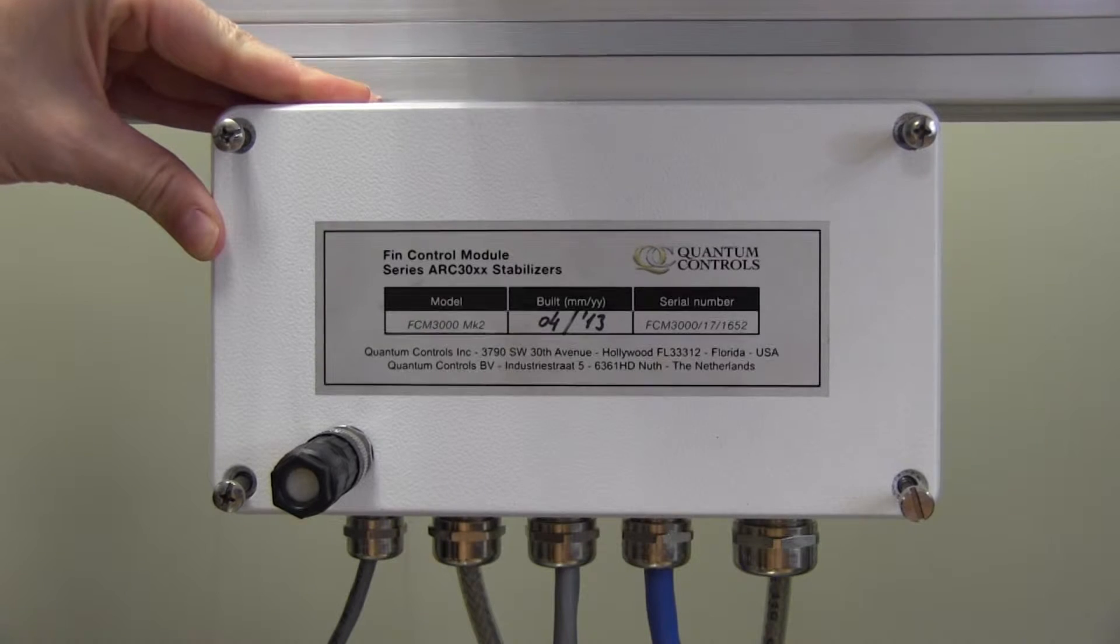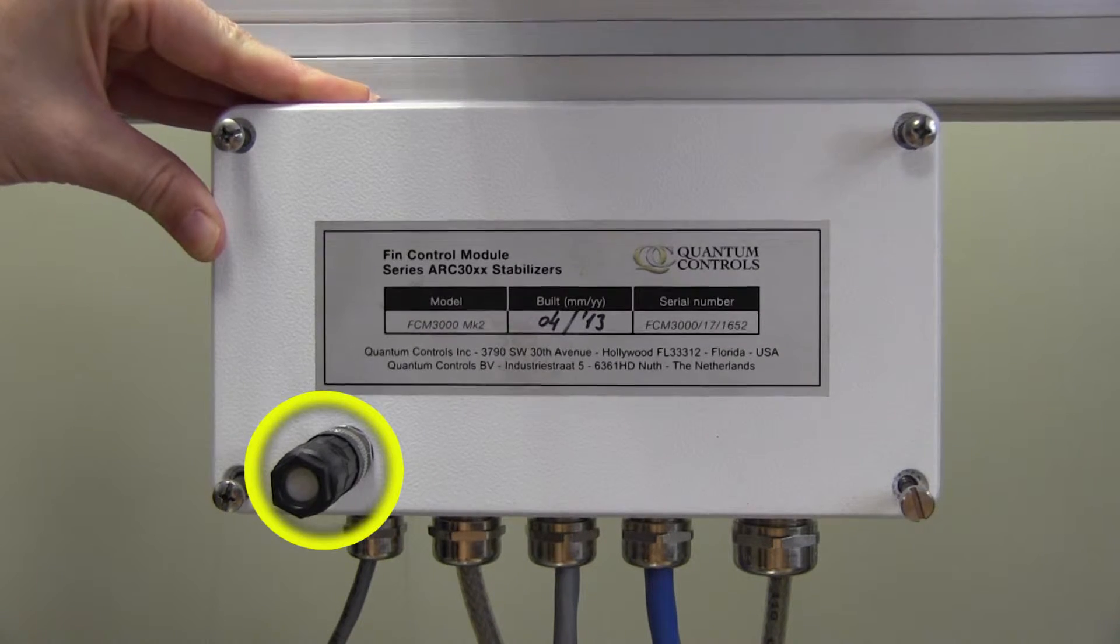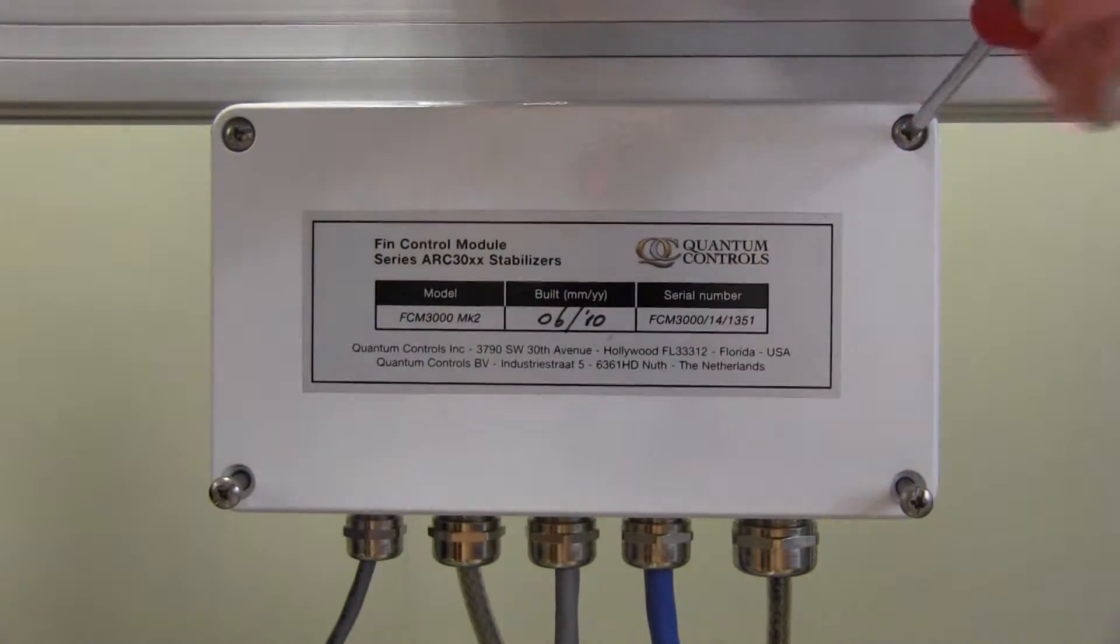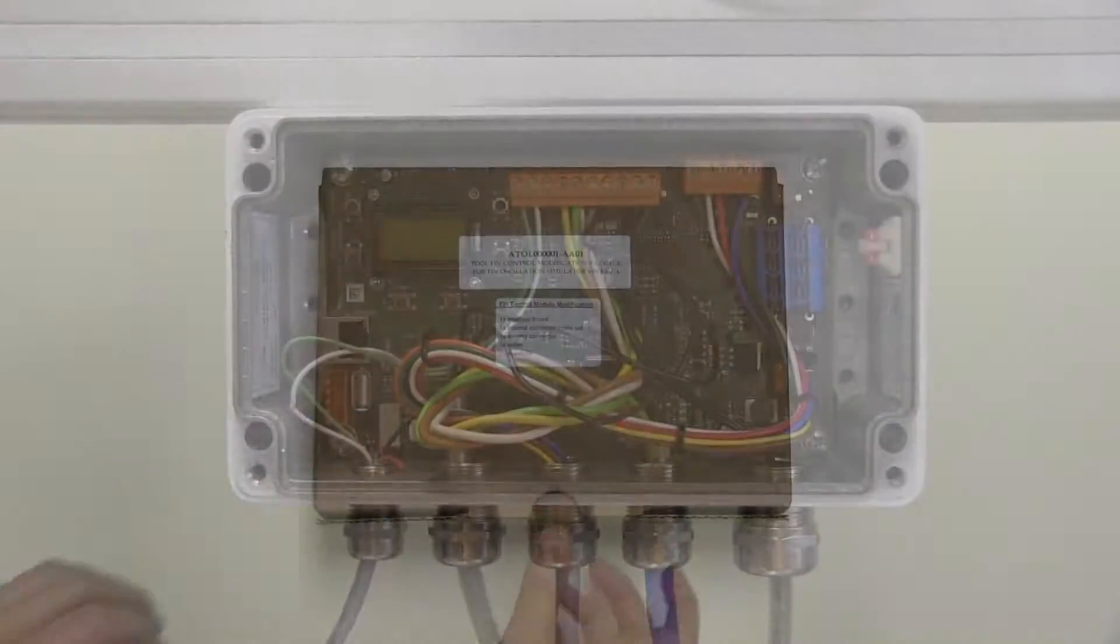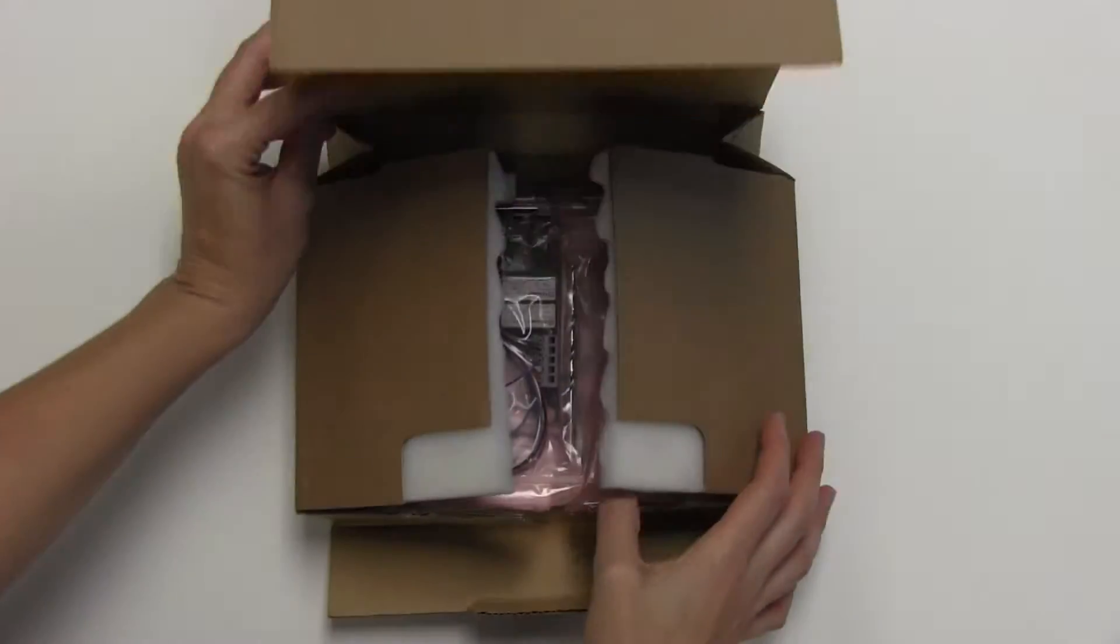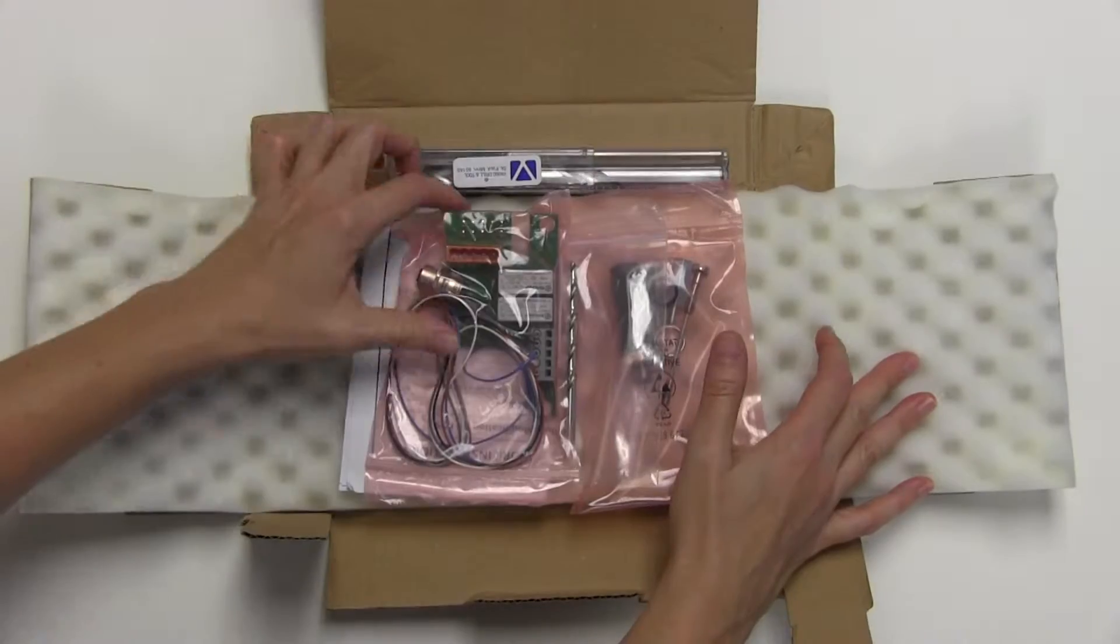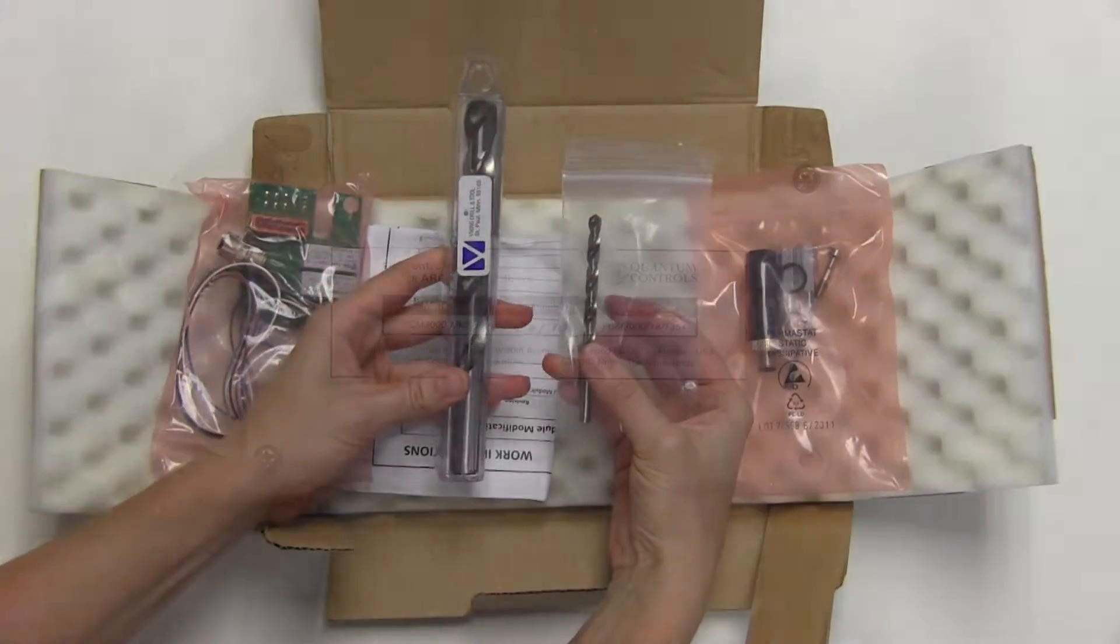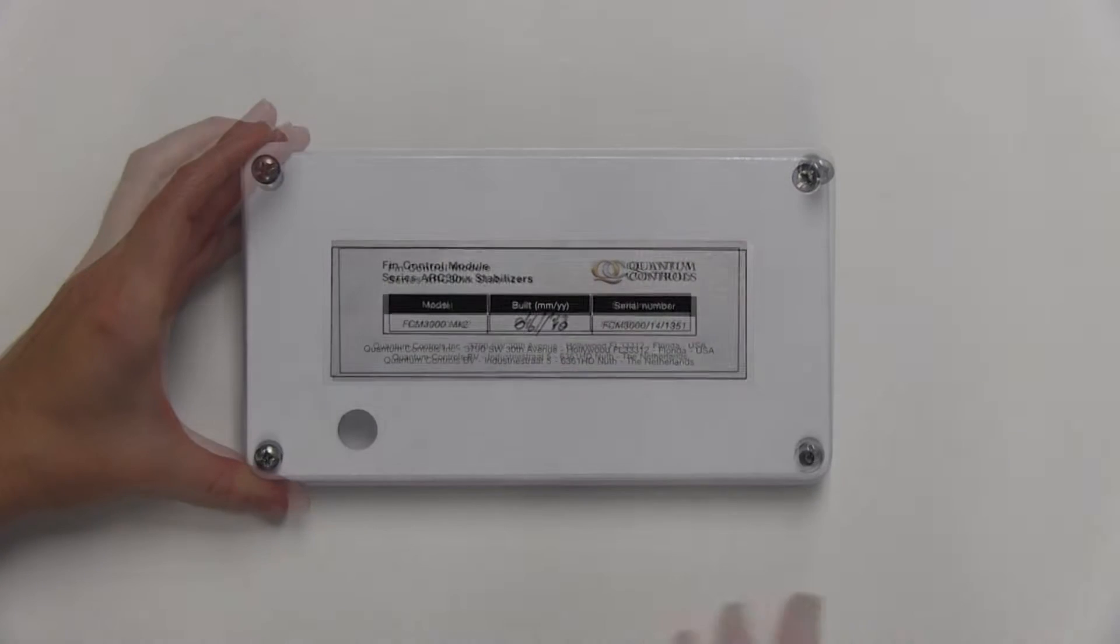Let's begin by modifying the fin control module cover to include the external connection point. Using the Phillips head screwdriver, remove the cover from the fin control module. Using the 1/4 inch and 19/32 inch drill bits provided in Quantum's fin control module modification package, drill a hole in the fin control module cover.